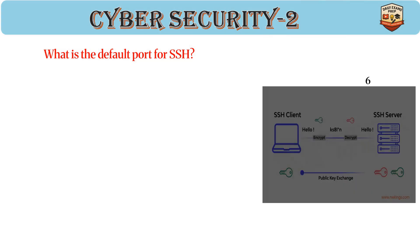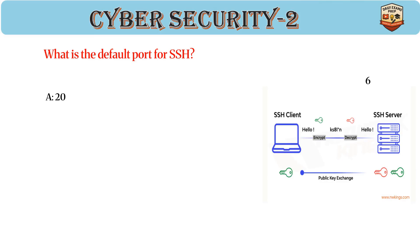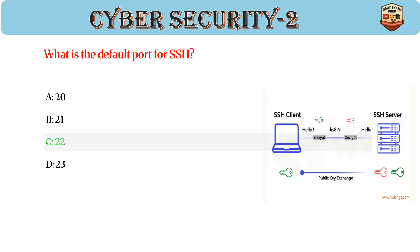What is the default port for SSH? Answer: C. 22. SSH uses port 22 by default. Provides secure remote login and file transfer. Encrypts data to prevent sniffing.